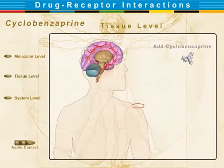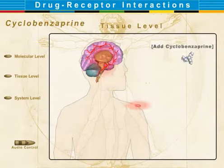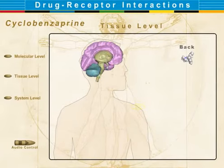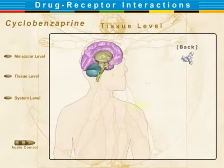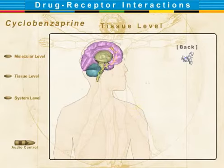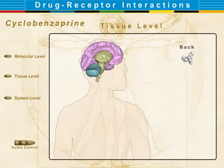Peripheral pain stimuli are transmitted to the brain and recognized as painful. Cyclobenzaprine causes sedation at the brainstem level, mainly through anti-muscarinic effects, similar to the tricyclic antidepressants, and reduces the sensation of pain. It inhibits descending serotonergic pain pathways through 5-HT2 receptor antagonism, generating inhibitory postsynaptic potentials (IPSPs), further reducing the transmission of pain stimuli.